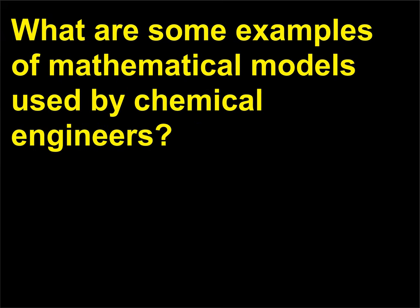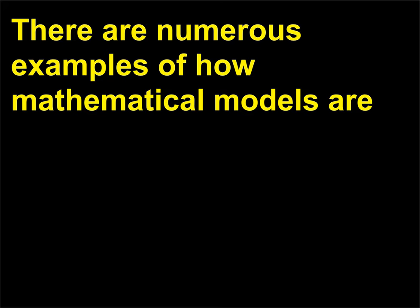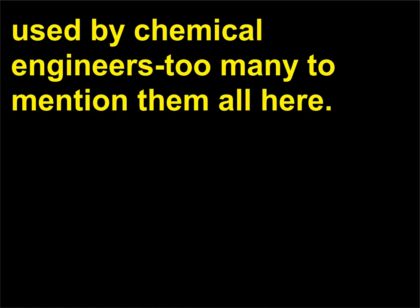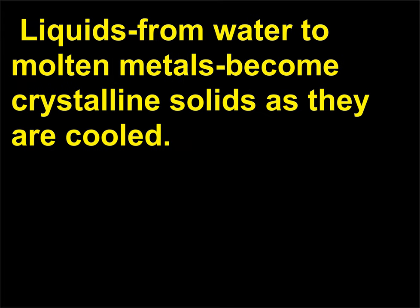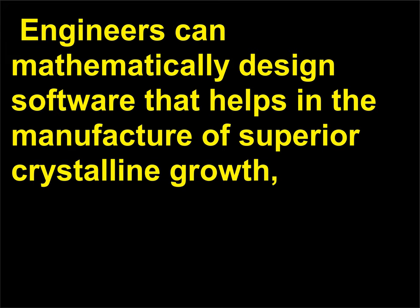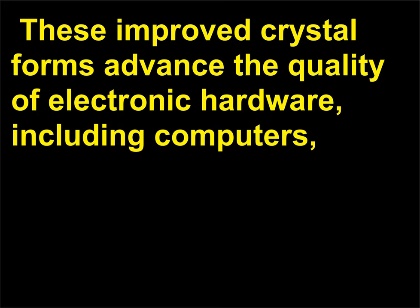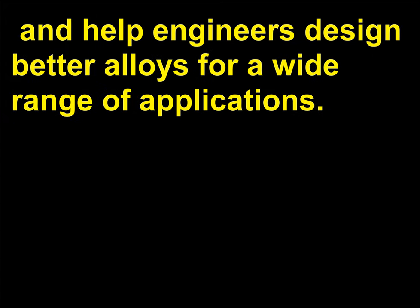What are some examples of mathematical models used by chemical engineers? There are numerous examples of how mathematical models are used by chemical engineers — too many to mention them all here. One good example is modeling crystal growth. Liquids from water to molten metals become crystalline solids as they are cooled. Engineers can mathematically design software that helps in the manufacture of superior crystalline growth, especially for electronics and other industries. These improved crystal forms advance the quality of electronic hardware including computers, and help engineers design better alloys for a wide range of applications.